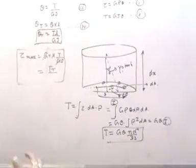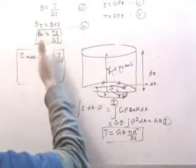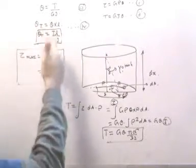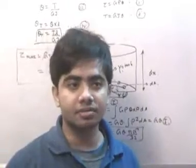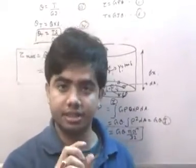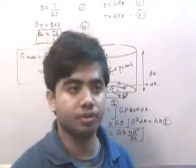Now torsion is also linked with theta T and is related to L, the length of the shaft. Obviously, the greater the length of the shaft, the more the deformation, strain, or angle of twist.